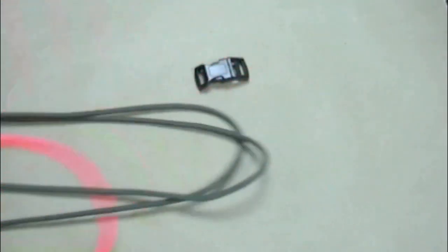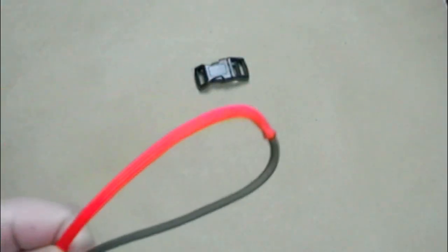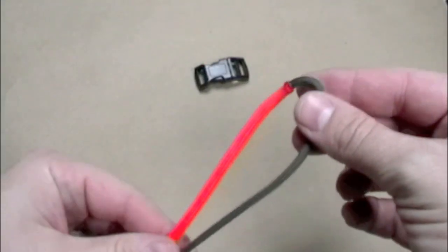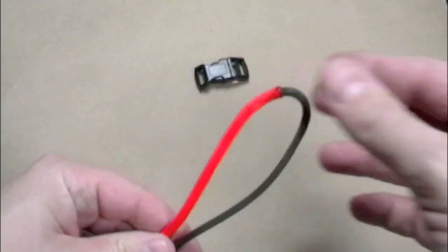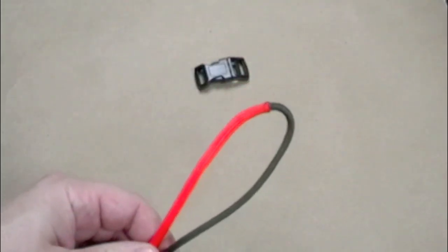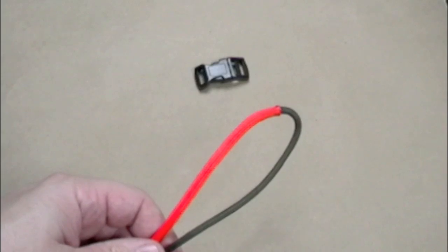Our first step, since we're using two colors, is to join the two colors together. If you aren't sure how to do that, we do have a video on that so you can jump over to our project page on the website or go to our YouTube channel and search for the video on how to join two pieces of paracord.